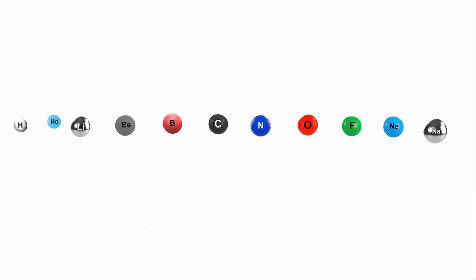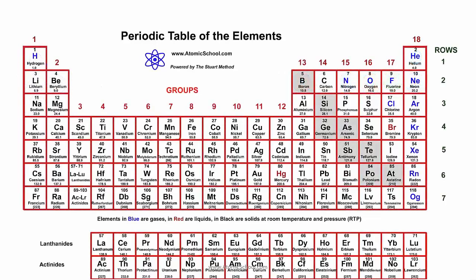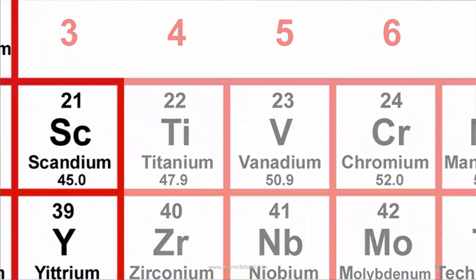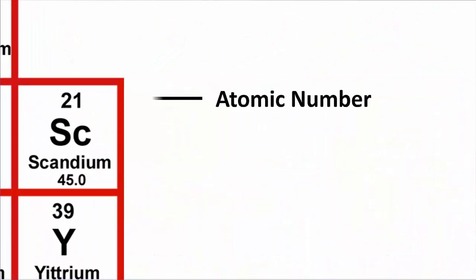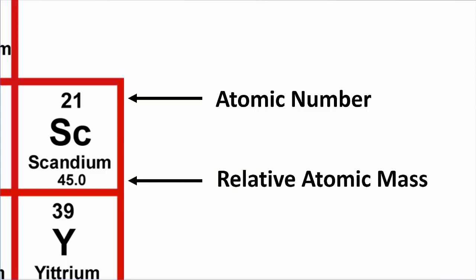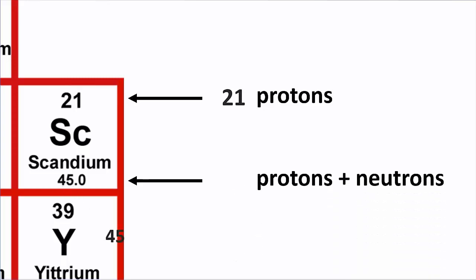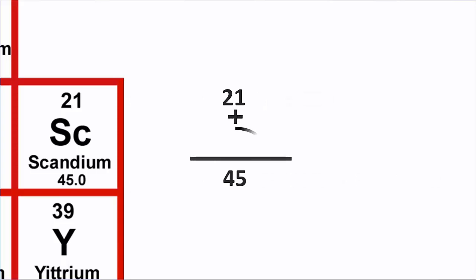How about some heavier elements? How many neutrons does scandium have? Its atomic number is 21 and its relative atomic mass is 45. That tells us it's got 21 protons and 45 protons plus neutrons. The difference is 24. Scandium's got 24 neutrons in its nucleus.